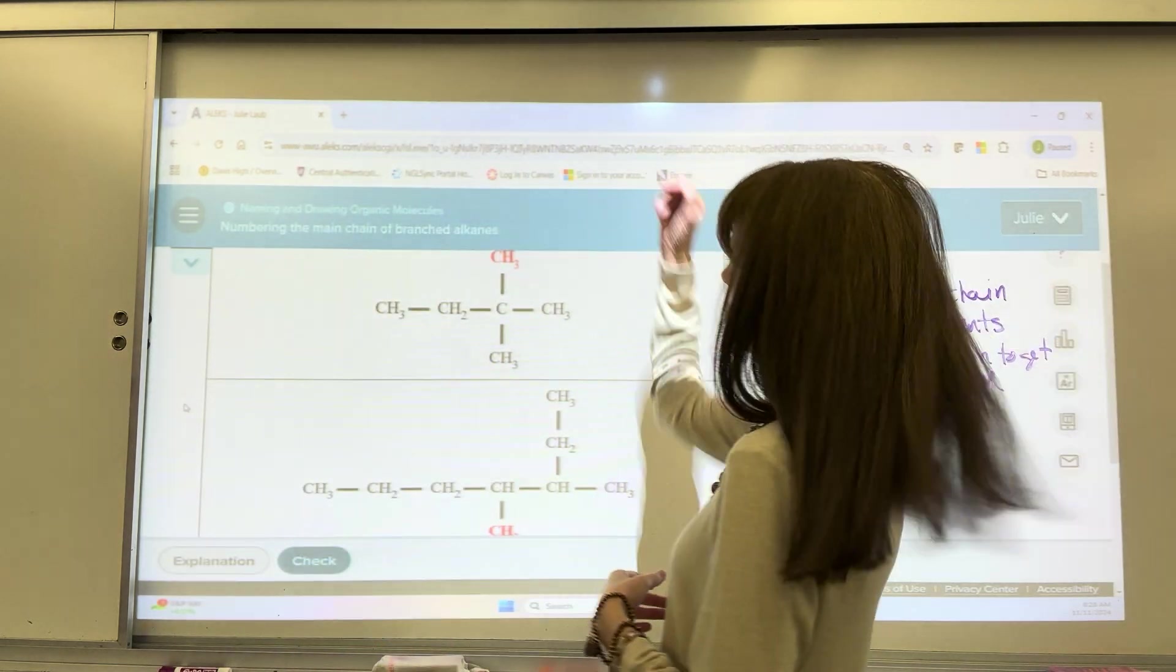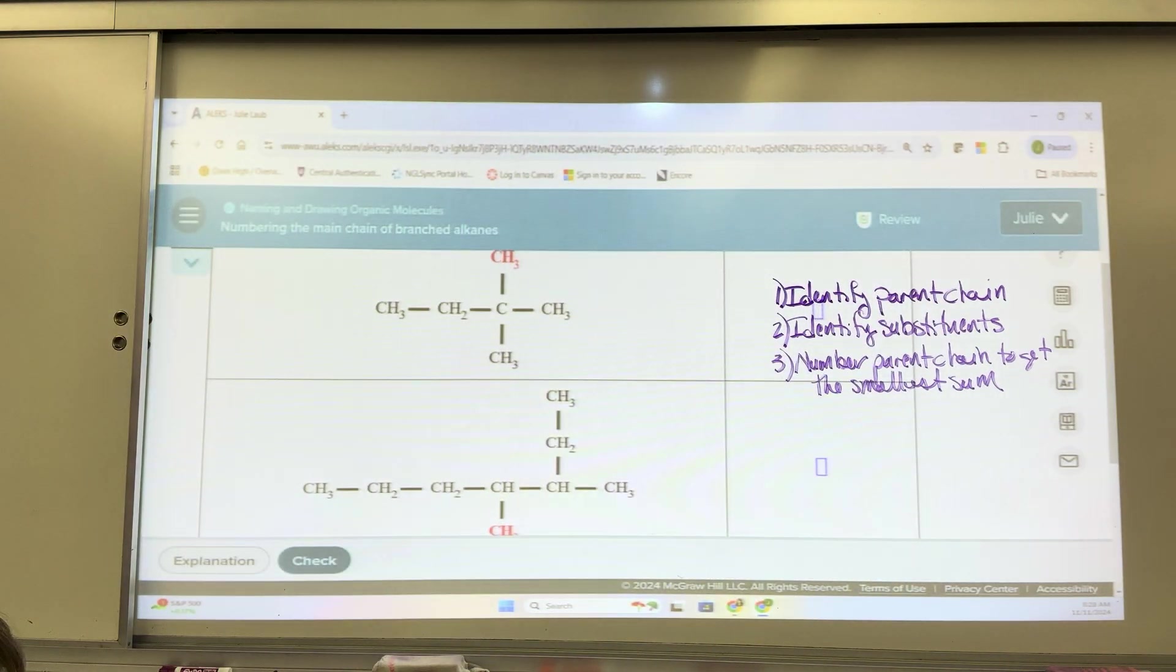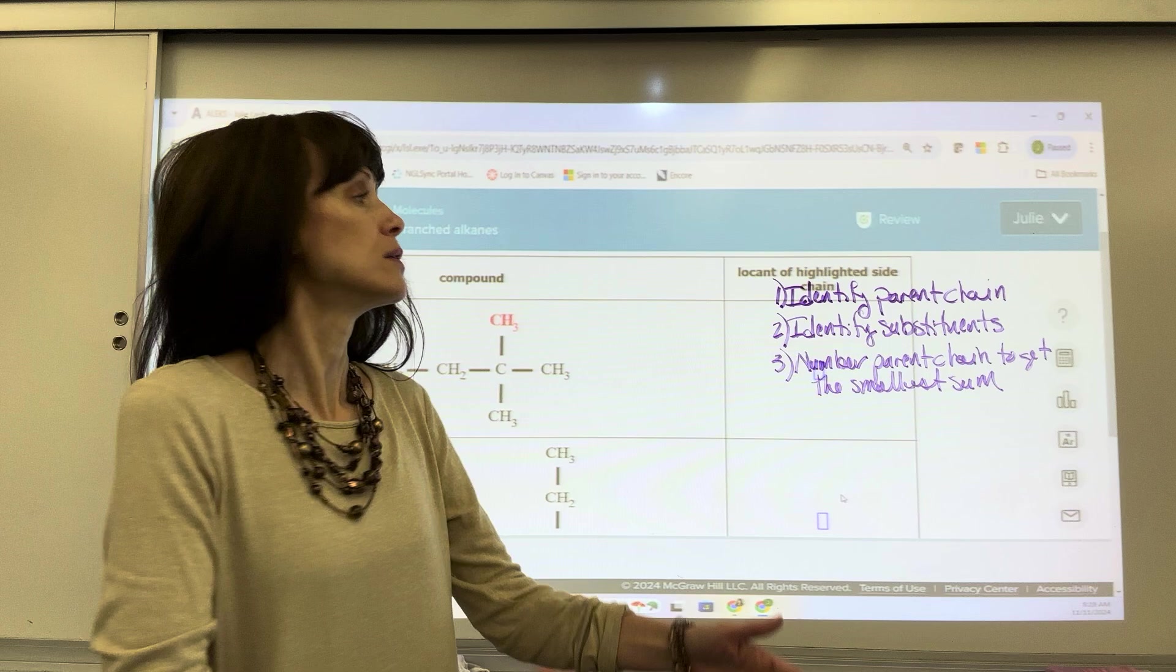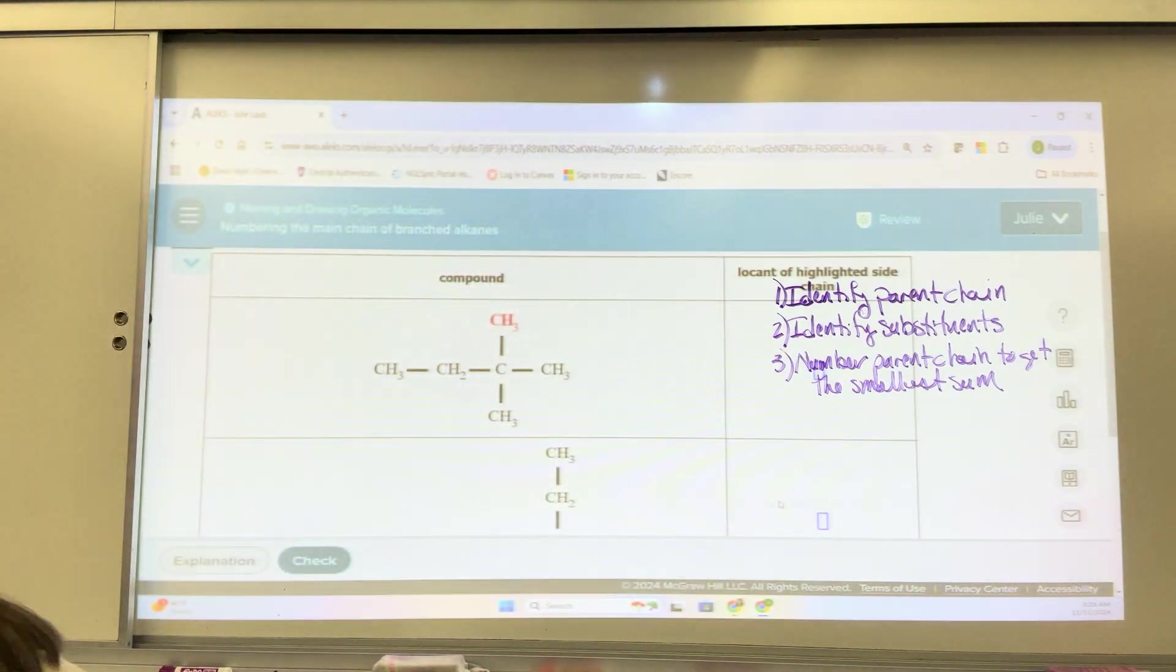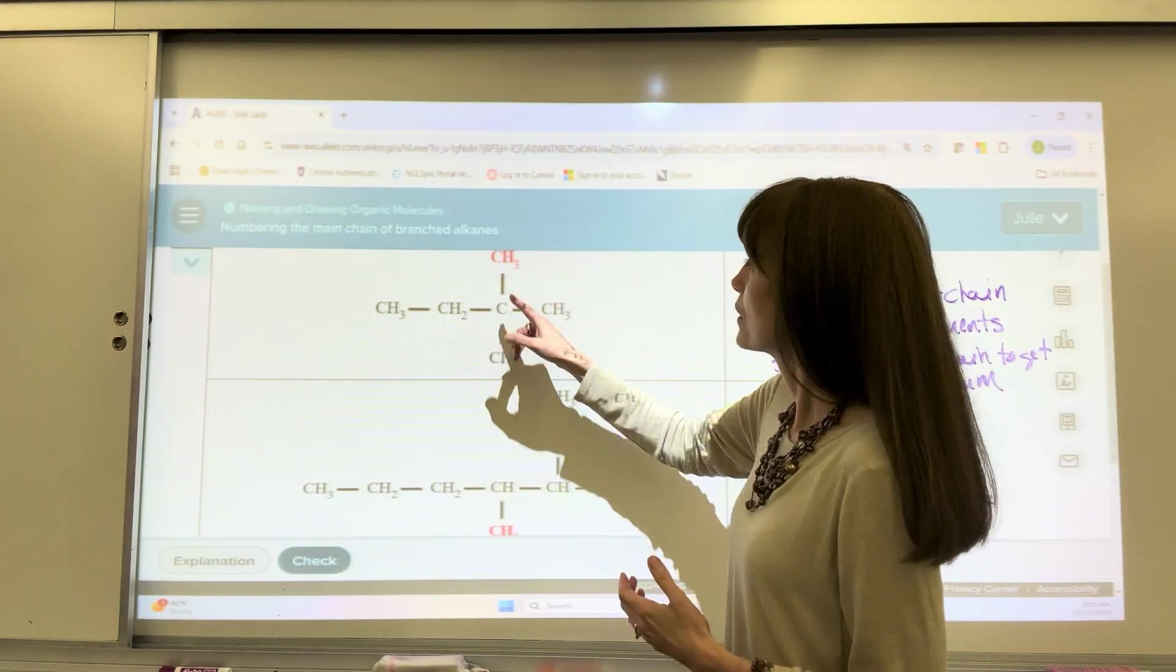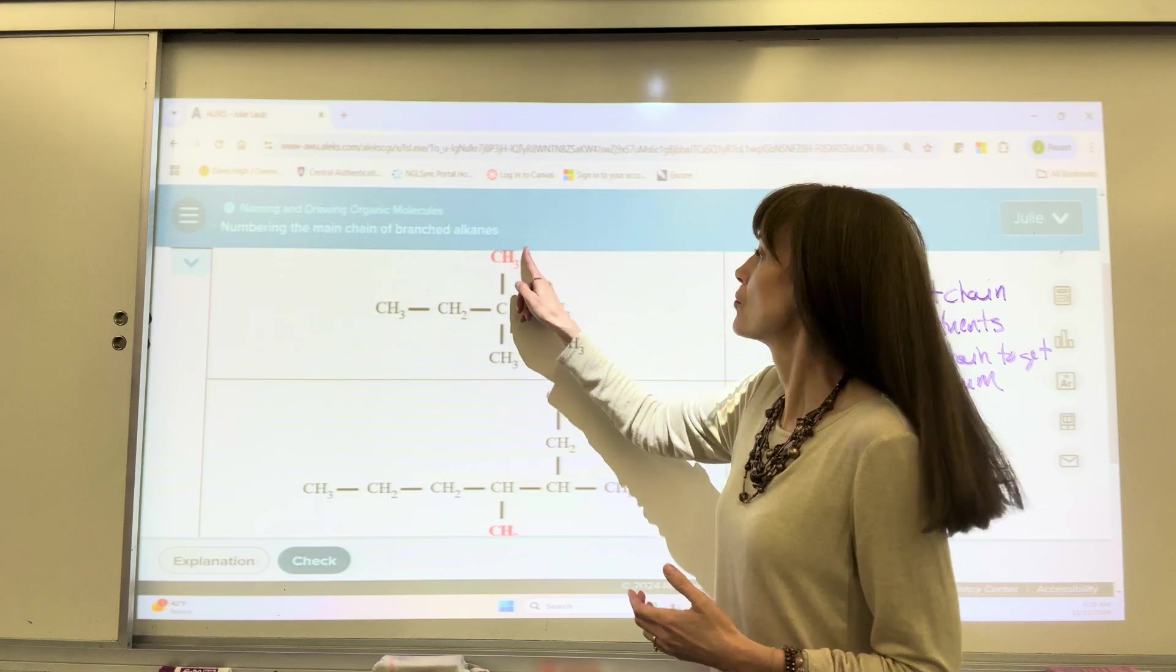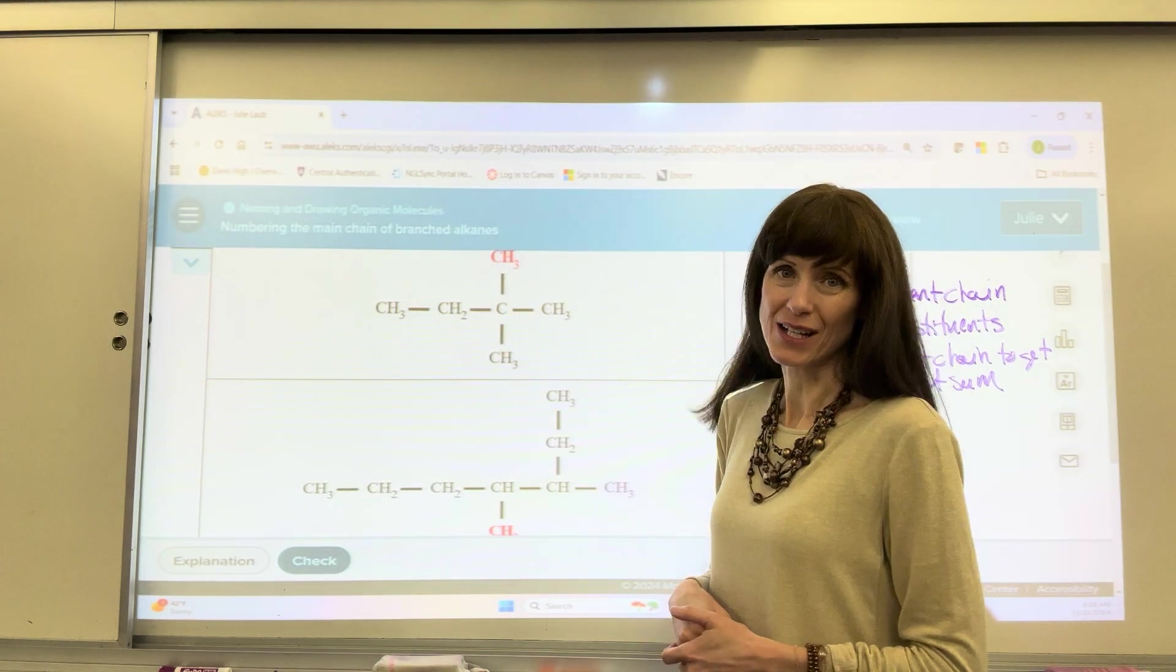So let's jump in and do this. Oh, and let me show you on this Alex topic. They will say, locant of highlighted side chains. So they want us to give the address in essence. They want us to give the location, the number of where the highlighted substituent of what carbon that's attached to.